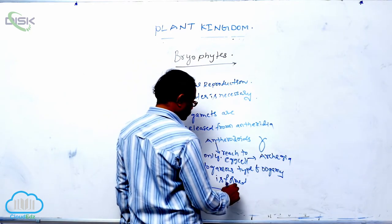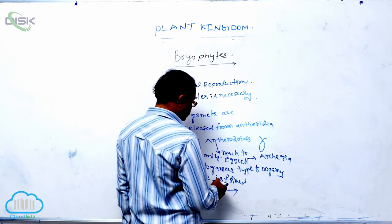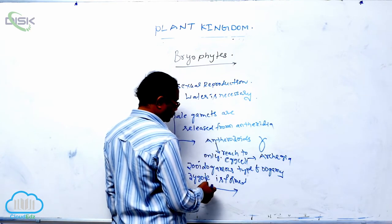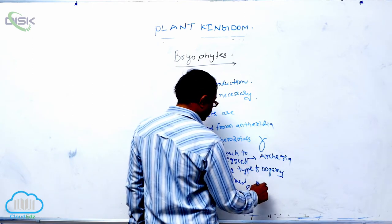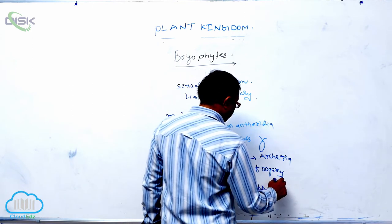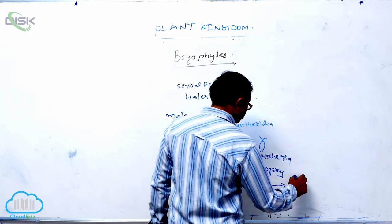After zygote, immediately is not that embryo. Then, zygote is converted into that embryo. Embryo is differentiated that multicellular diploid structure that is known as that sporophyte.